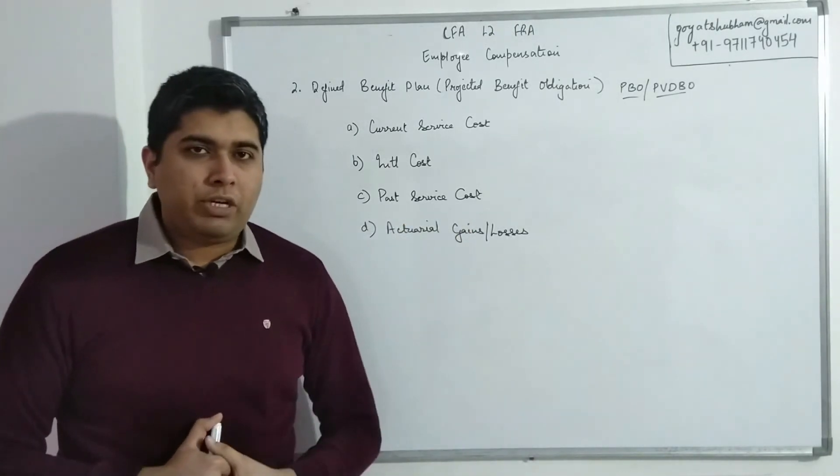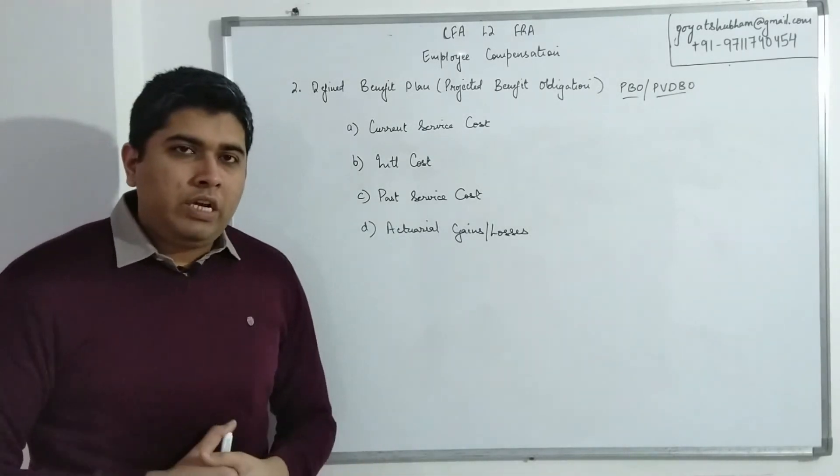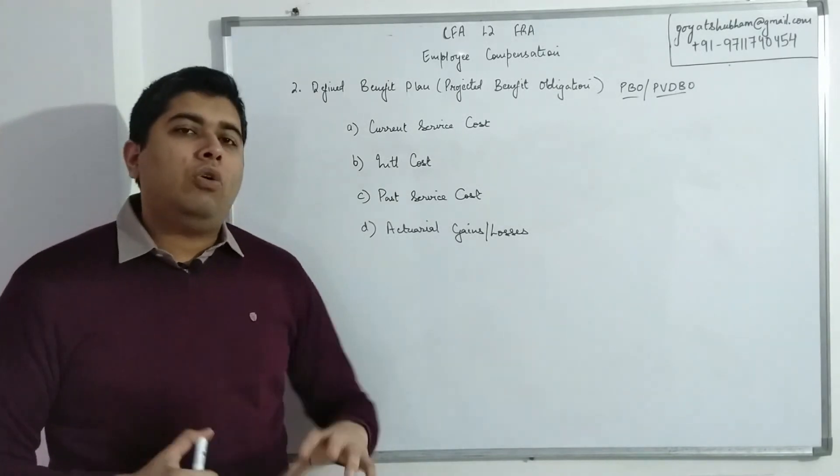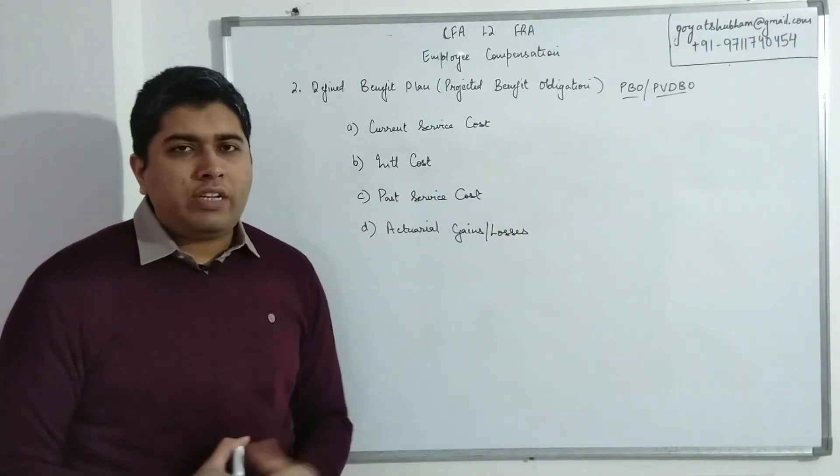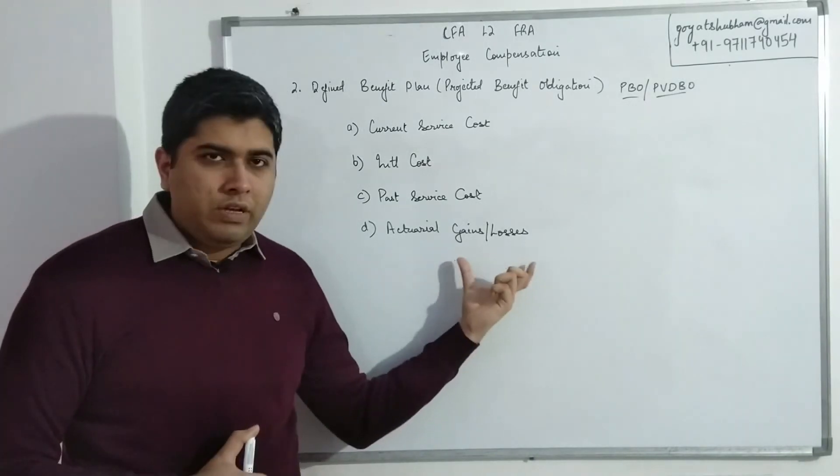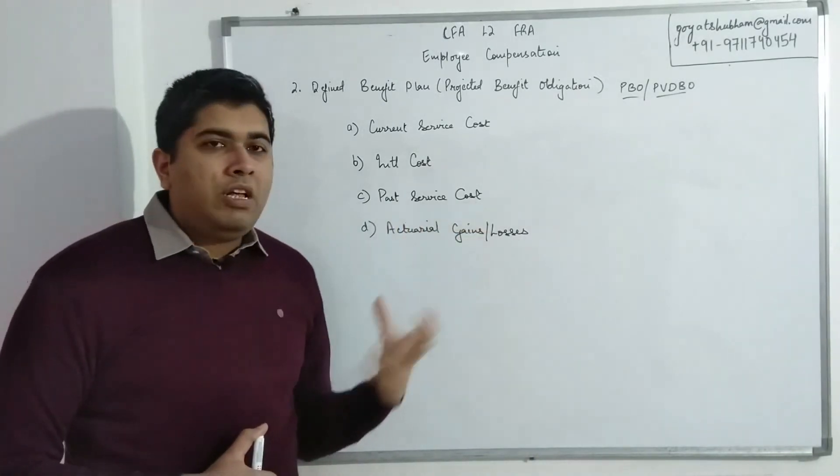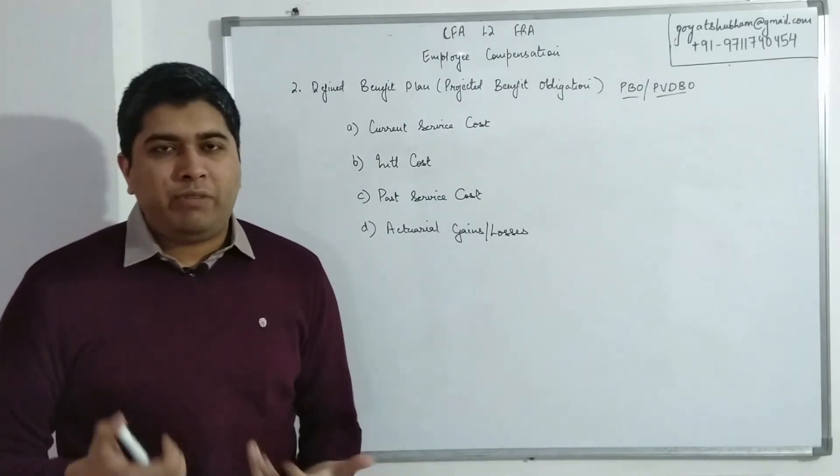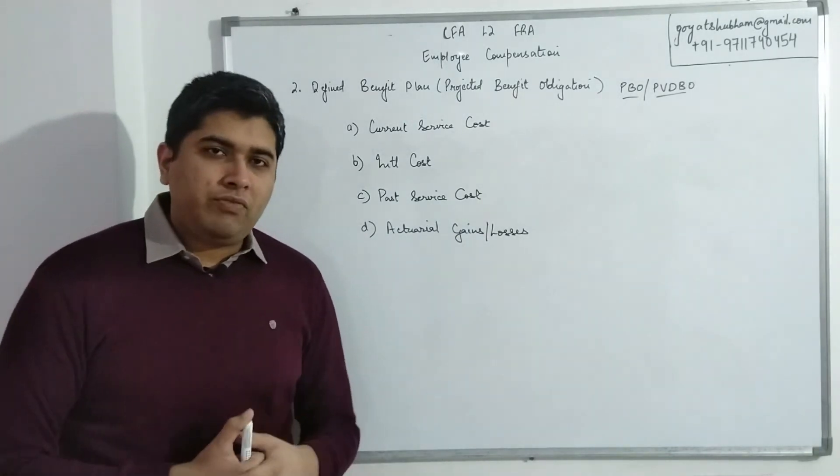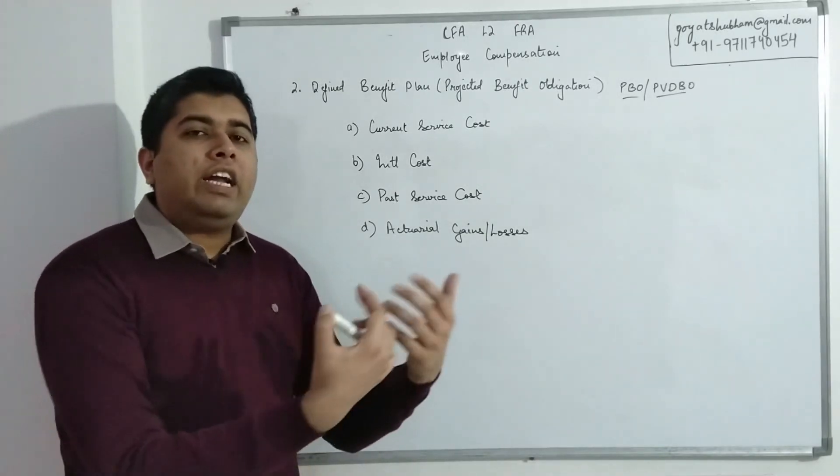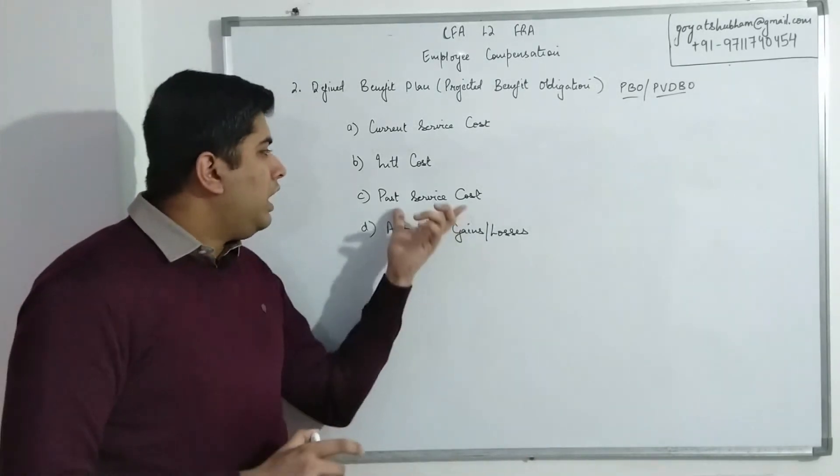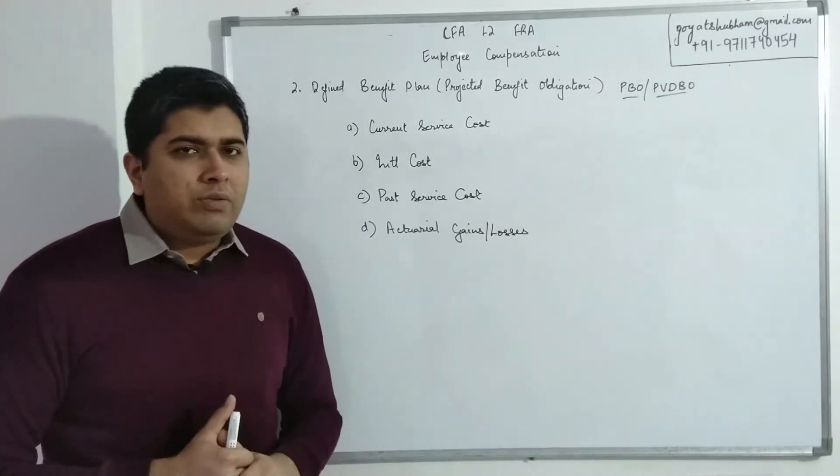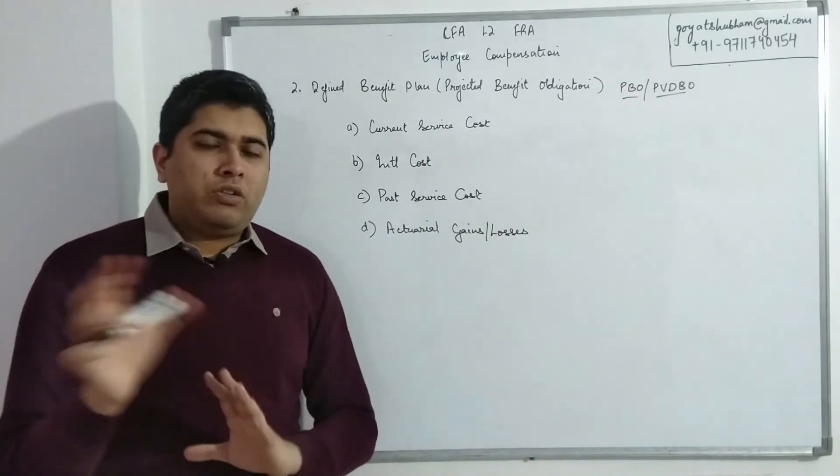A very similar thing happens with actuarial calculations as well where they are also in their professional opinion giving you the best possible outcome that they can. However, even that best outcome is based on some assumptions. So if due to passage of time some of those assumptions are changing, that could also cause a change in my benefit obligation. That is Actuarial Gains and Losses. Now these two last two components, these are of the nature when they will be given to you in the exam, because you and I are not actuary experts to the point where we can calculate this manually. So as such, in your exam you don't have to calculate this.